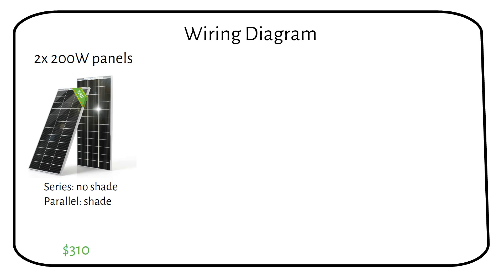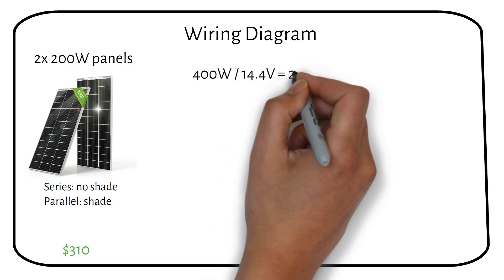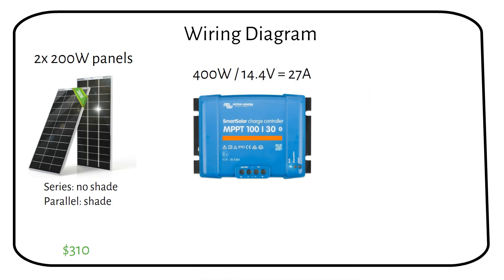To determine the charge controller power requirement, we will use the formula: 400 watts divided by charging voltage equals 27 amps. A 30 amp charge controller will be sufficient.